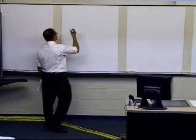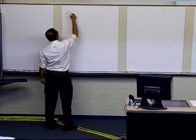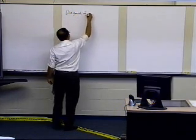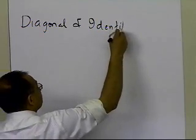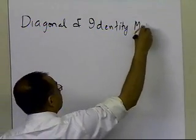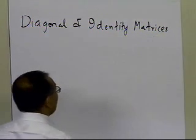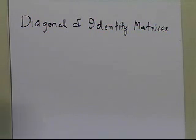In this segment, we'll talk about some special matrices called diagonal and identity matrices. These are important matrices to understand since you want to learn the numerical methods of solving simultaneous linear equations. So let's go ahead and look at these special matrices — what is the diagonal matrix and what's the identity matrix.